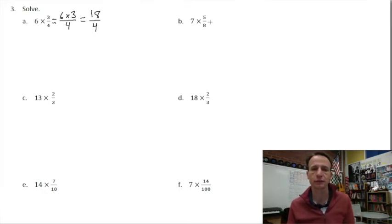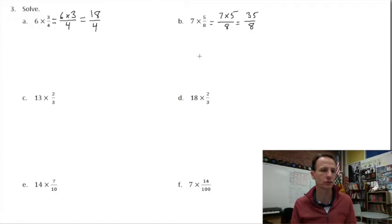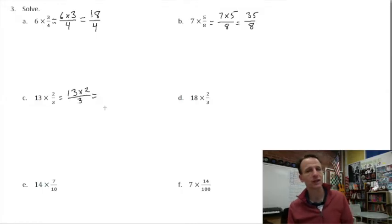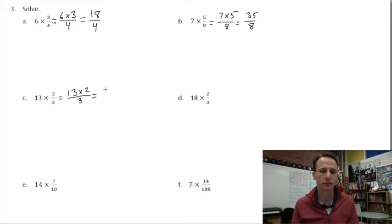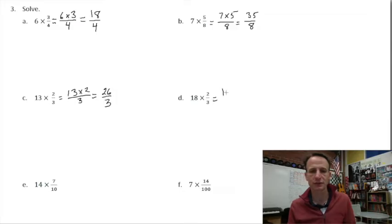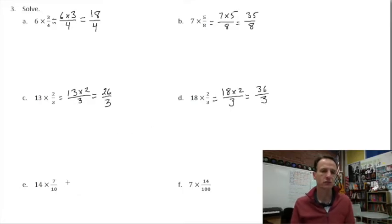This one we'd write as 7 times 5 eighths. 7 times 5, you got it, 35, and we're still talking about eighths. Told you this was going to be quick. 13 times 2 thirds, 13 times 2, yeah double it, 13 and 13 is 26, and we're still talking about thirds. Same thing here, 18 times 2, can you double 18? 18 and 18, we're talking about thirds. 36 thirds.